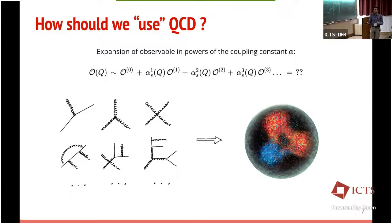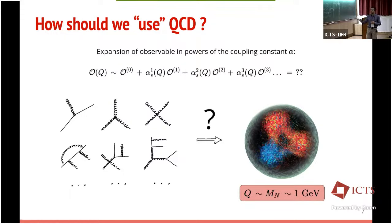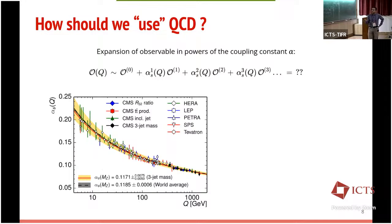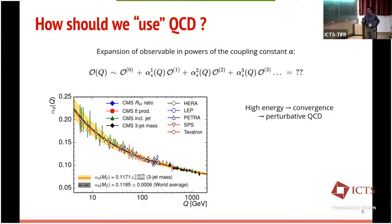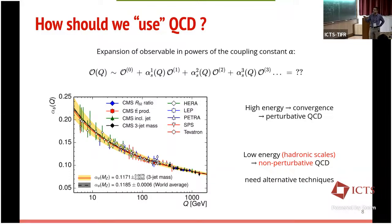In field theory you can compute any observable as an expansion in powers of the coupling constant. You can do it for cross sections and whatever you want, but if you want to calculate properties of hadrons at the scale of the hadron mass, things go badly wrong. The coupling constant of the theory grows when the energy decreases, so at high energies the perturbative series converges and you get finite answers — this is the regime of perturbative QCD. But at low energy these expansions break down and you cannot get finite answers.